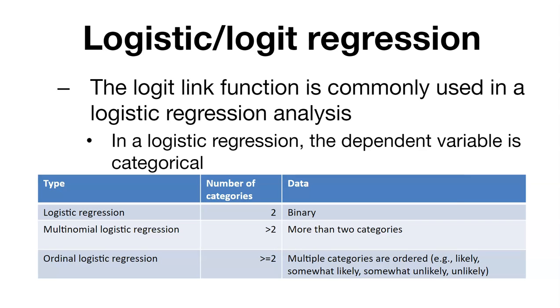So logistic regression, in a nutshell, analyzes a set of data in which there are one or more independent variables that determine an outcome. This differs greatly from linear regression. In logistic regression, the dependent variable is categorical. Now for most of logistic regression problems, we only have two categories and we have binary data. We have a plant that survived or died, as an example.